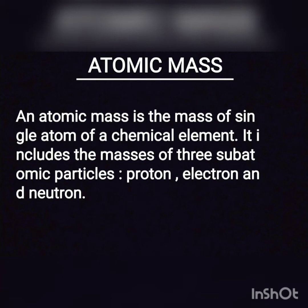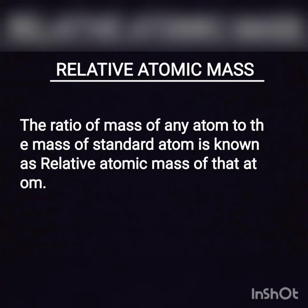In the previous video, we learned that the atomic mass of any atom is the mass in which all three sub-atomic particles — electrons, protons, and neutrons — are included. Because the size of an atom is very small, the concept of relative atomic mass was introduced. In this, one atom is taken as a standard atom, and by comparing the mass of an unknown atom with it, the relative atomic mass of the unknown atom is calculated. The ratio of mass of any atom to the mass of the standard atom is known as relative atomic mass.